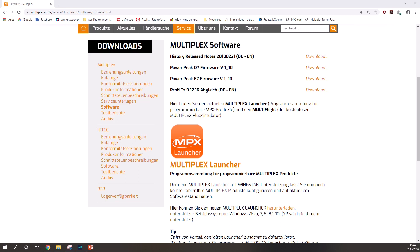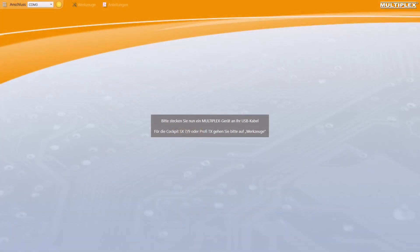You will find the Multiplex launcher on the Multiplex website at service, downloads and software. So did you download and update the Multiplex launcher and are you the owner of the Wing Stubby Classic System? I will show you how to make Wing Stubby Easy Control out of it.